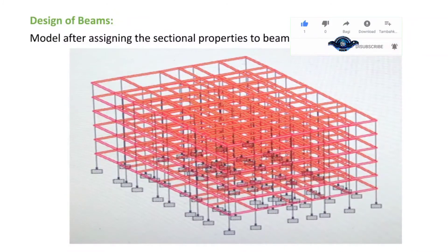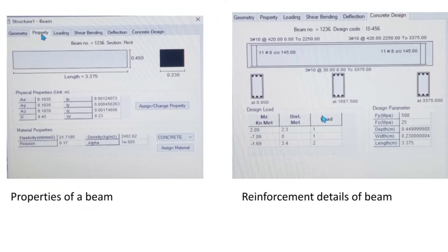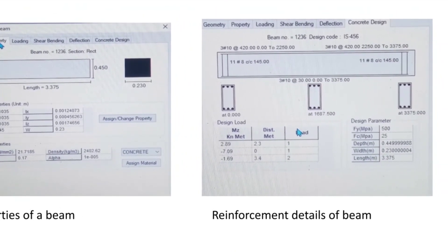Next, the design of beams. This is the model after assigning the sectional properties to the beam. The report which comes from STAAD Pro: the first picture shows the properties of the beam and the next picture shows the deflections of the beam.